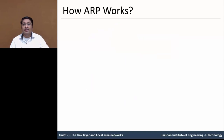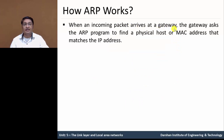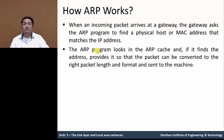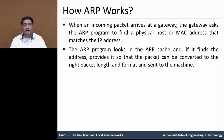When incoming packets arrive at the gateway, the gateway asks the ARP program to find a physical host, means MAC address, that matches the IP address. The ARP program looks in that table, means the ARP cache. If it finds the address, it provides it so that the packet can be converted to the right packet length and format and sent to the machine, means from system A to system B.